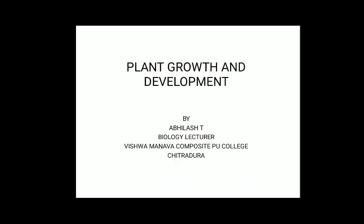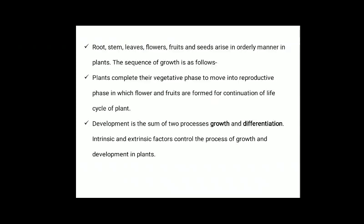Hello students, today we are going to discuss the first chapter, that is Plant Growth and Development. Root, stem, leaves, flowers, fruits and seeds arise in an orderly manner in plants. The sequence of growth is as follows: plants complete their vegetative phase to move into reproductive phase, in which flowers and fruits are formed for continuation of life.